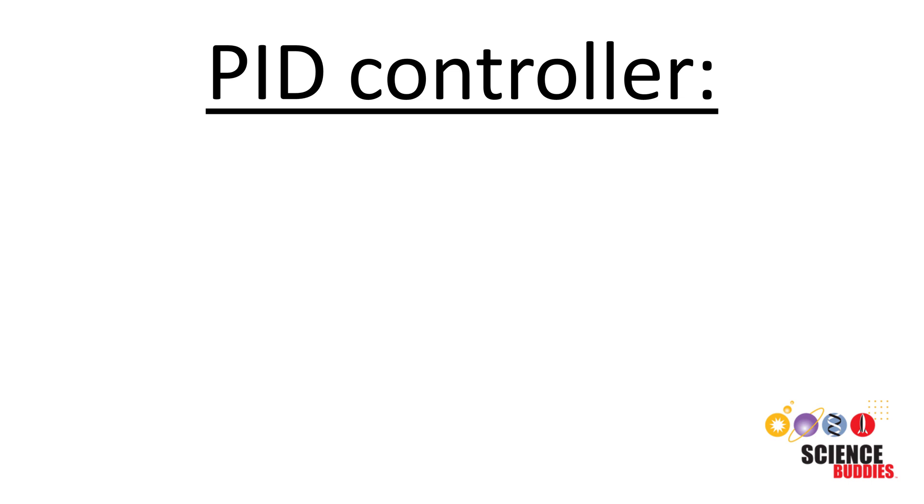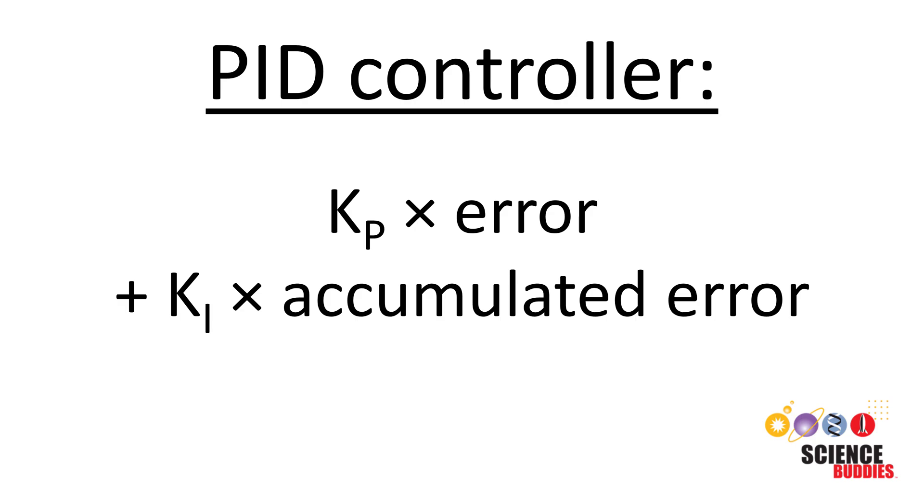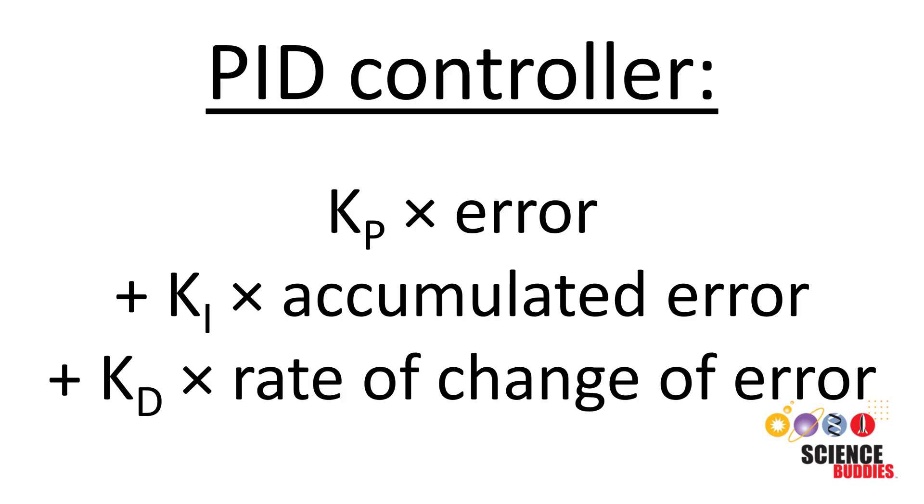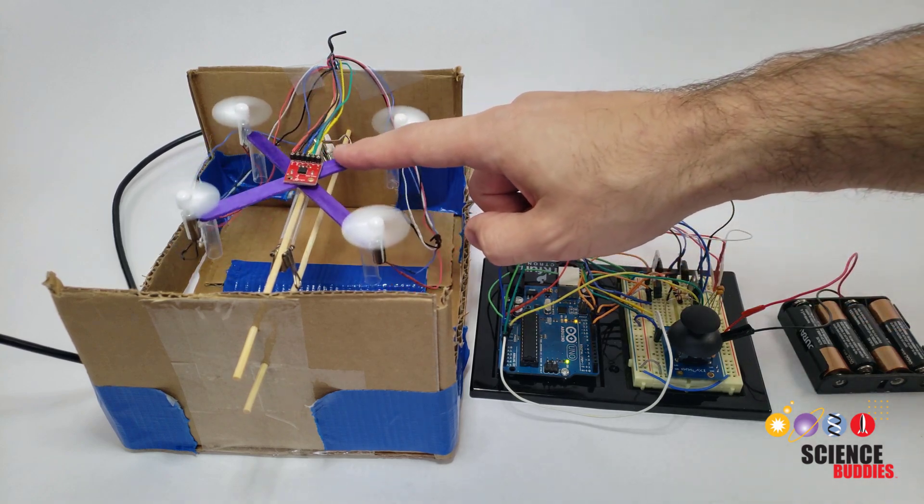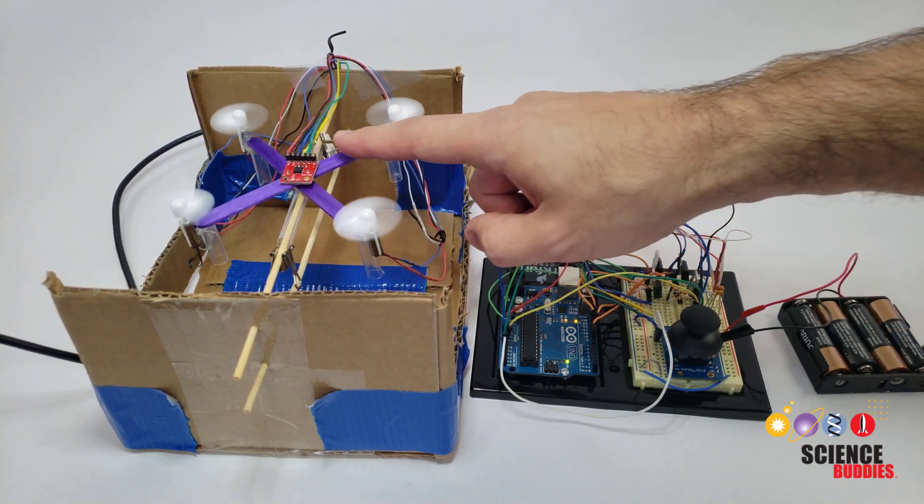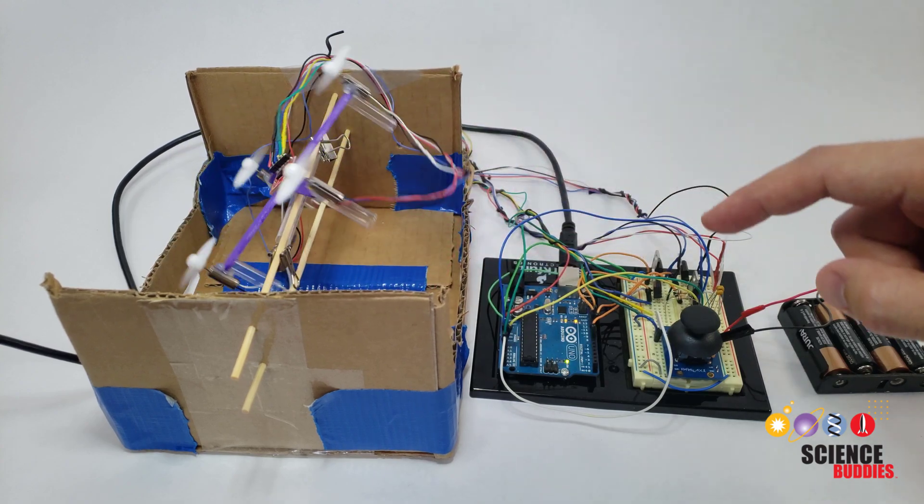A PID controller has three terms. One is proportional to the magnitude of the error. One is proportional to the integral of the error or the accumulated error over time. One is proportional to the derivative or rate of change of the error. Adjusting the relative contributions of these three terms changes how the drone will respond to joystick input or disturbances.